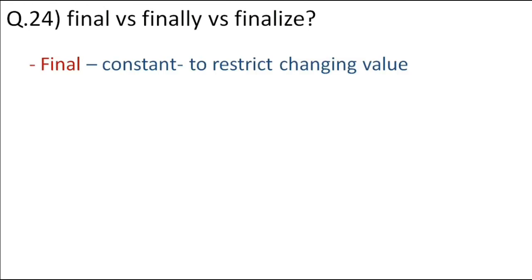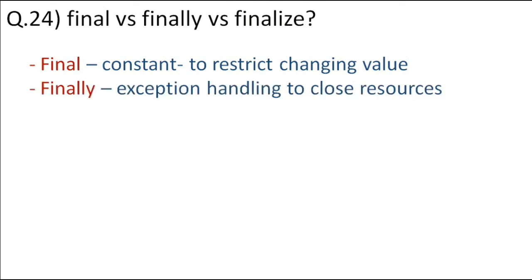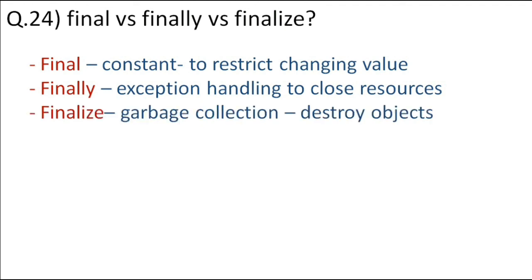What is the difference between final, finally, and finalize? Although they sound similar, they are very different. Final is used for constants — final variables, final methods, and final classes whose behavior cannot be changed once made final. Finally is used in exception handling along with the try-catch block — the finally block is used to close or release resources opened in the try-catch block. Finalize is used for garbage collection — inside the finalize method, you can destroy an object. So final, finally, and finalize are used in three different concepts in Java.